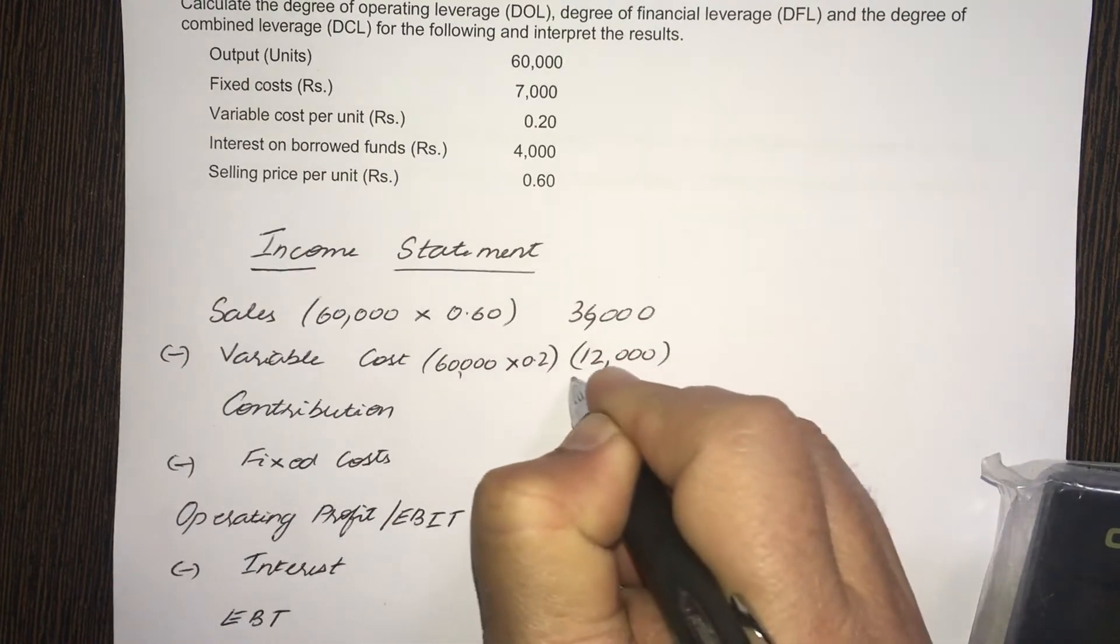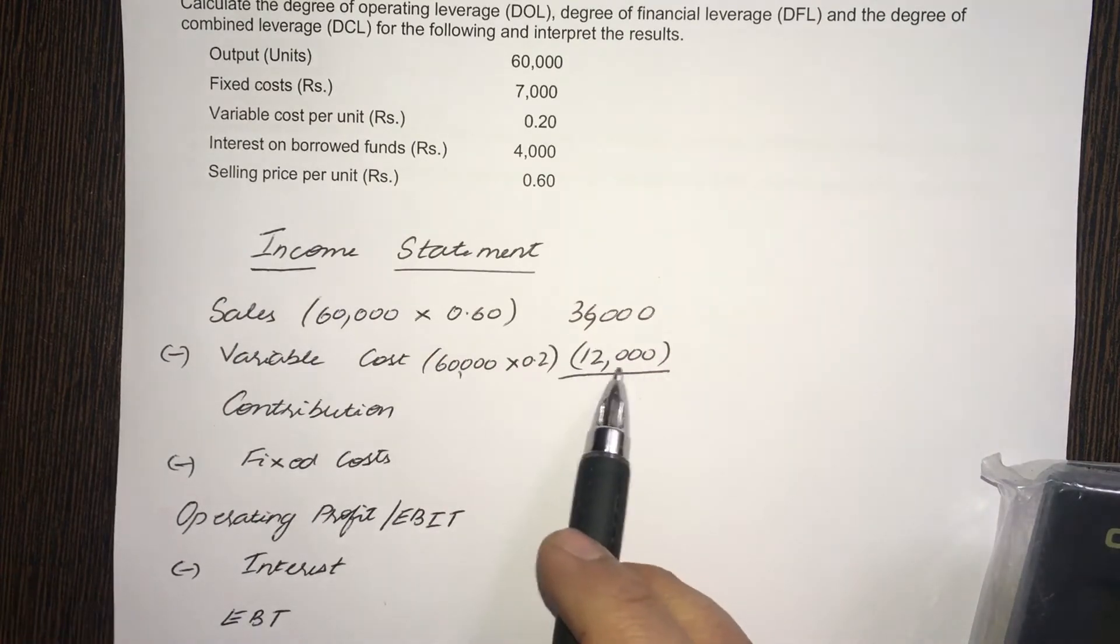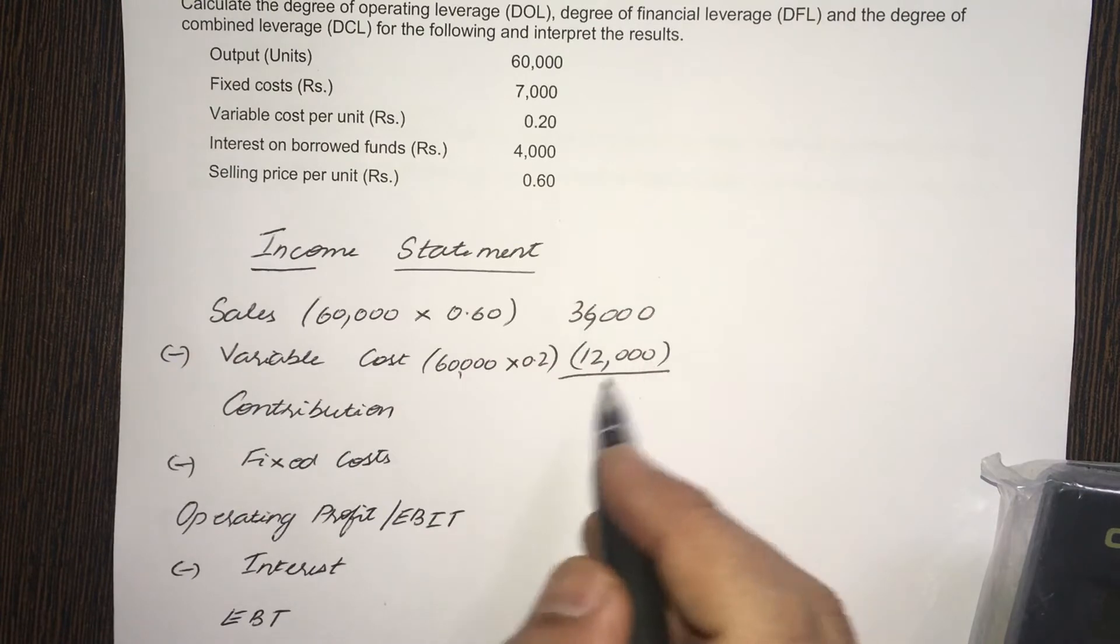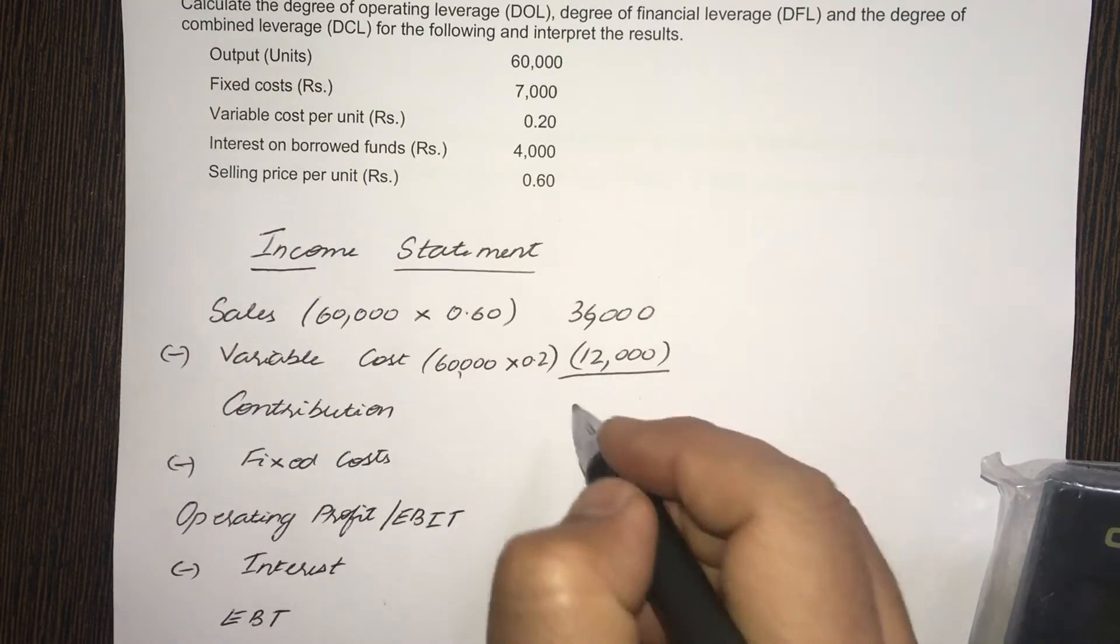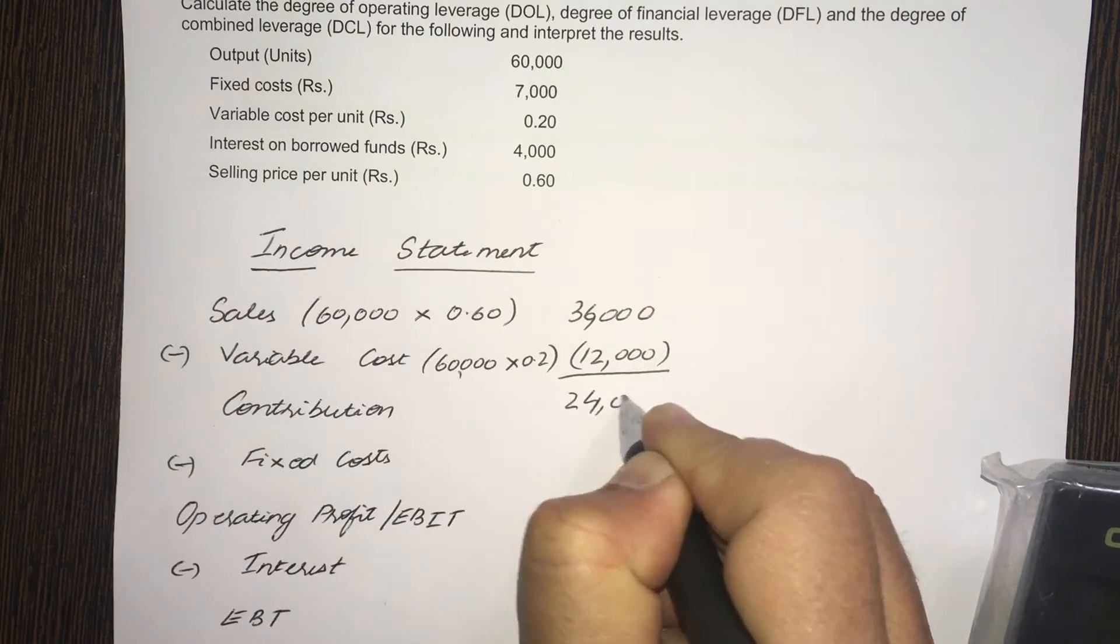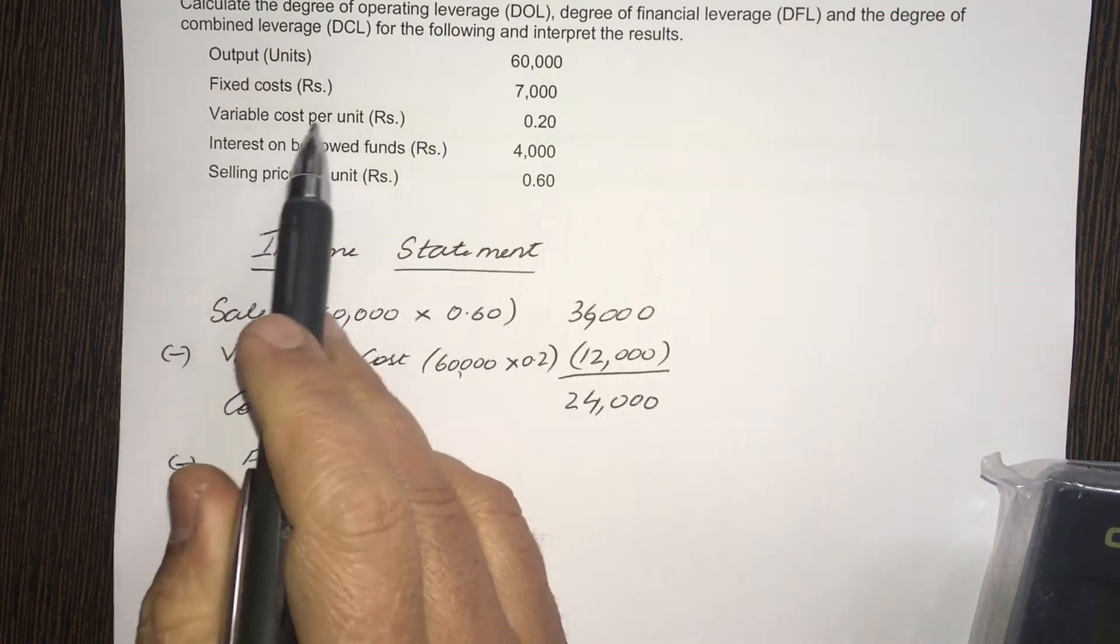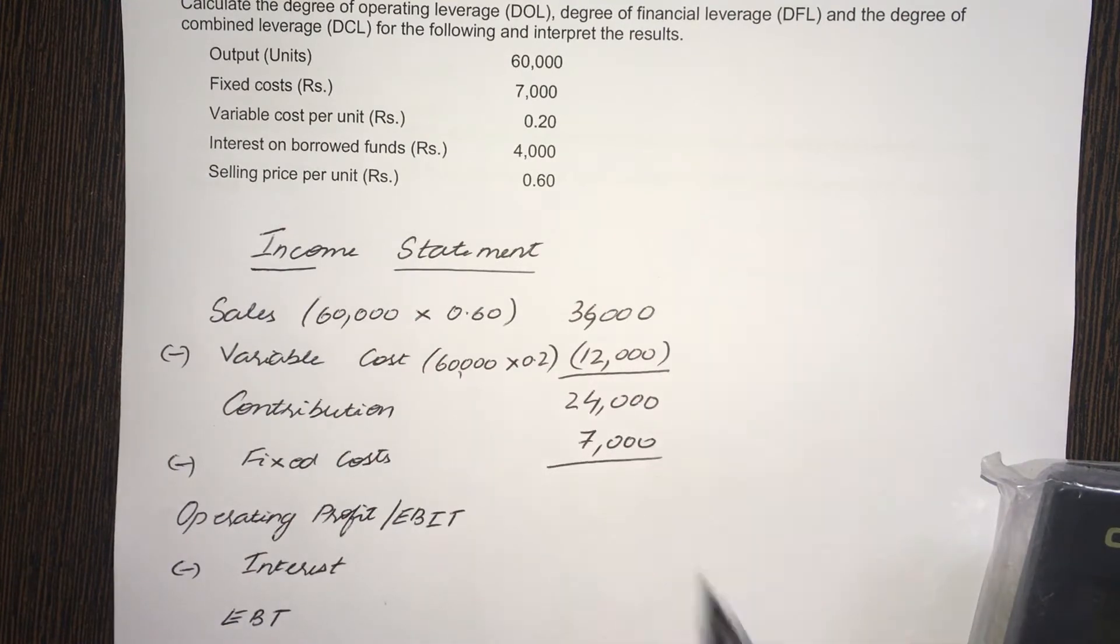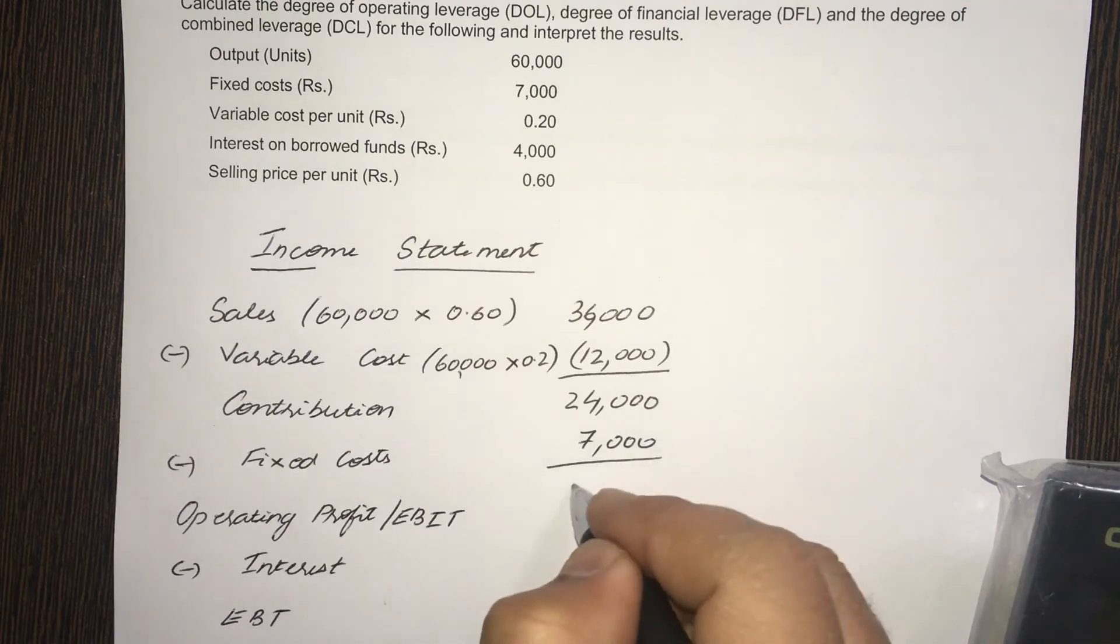Put that in brackets when you are deducting any figure. So, the contribution will be 24,000 minus fixed cost. Fixed cost is given, 7,000. So, 24,000 minus 7 is 17,000.